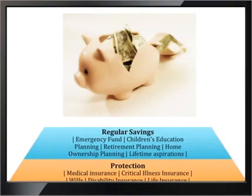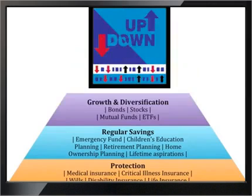Stage 2: Regular Savings. This is the stage where most people start their financial plan, with minimum savings goals for emergencies and vacations, and a focus on tax-advantaged, tax-deferred, or tax-free investments such as buying a home, college, and retirement accounts.